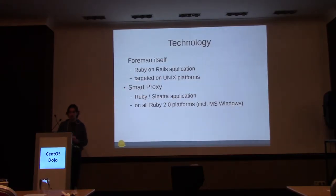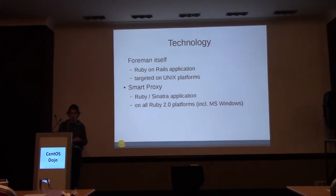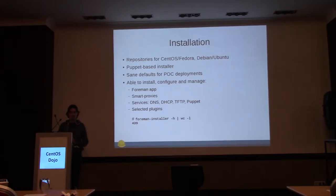Regarding technology: Foreman is a Ruby on Rails application. It started on Linux platforms and the smart proxy is written in Ruby using a lightweight network framework to provide REST APIs to Foreman. It runs on any Ruby-capable platform. The official repository is for RPM-based systems, but it is known to work on Debian and Arch Linux as well.